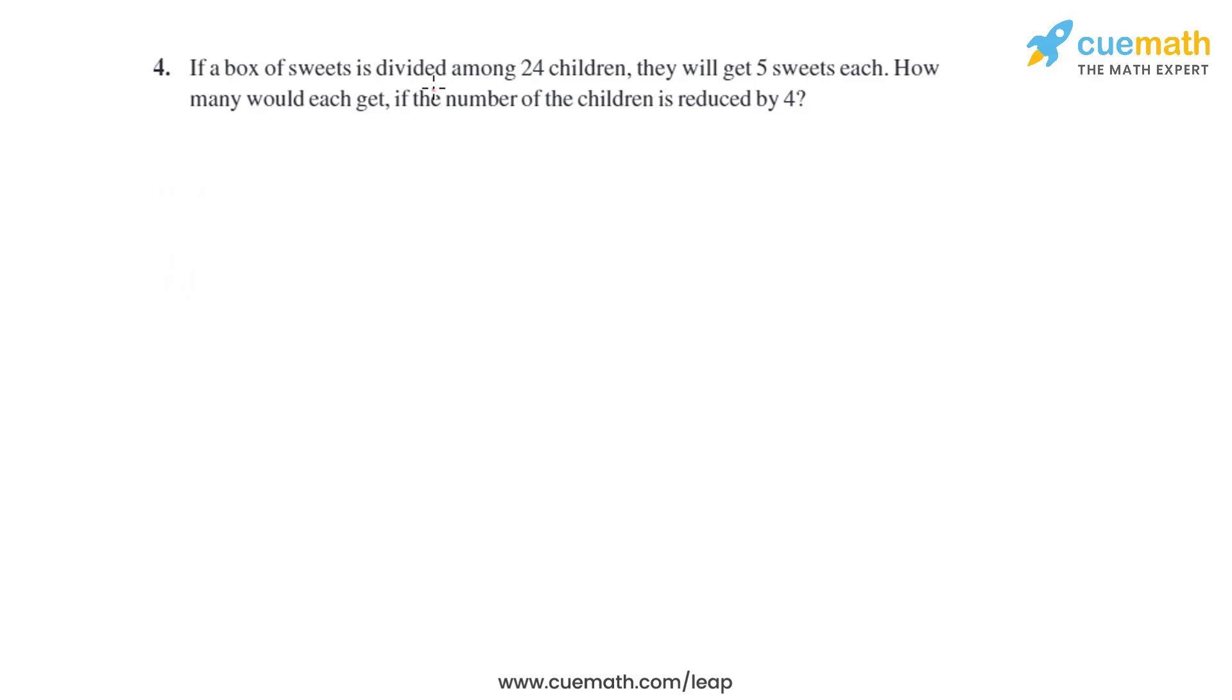Question 4 of this exercise says if a box of sweets is divided among 24 children, they will get 5 sweets each. How many would each get if the number of children is reduced by 4?